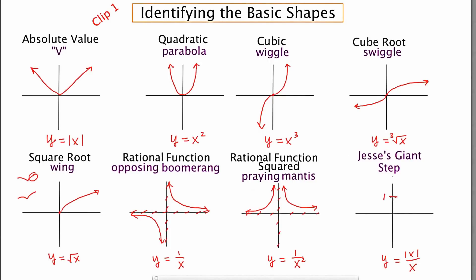Here's positive 1. In some cases, anything over itself is 1. But in other cases, if the x that you select is negative, then the ratio is going to be negative 1. So what you have here is basically a staircase with 1 giant step. So Jesse's giant step.